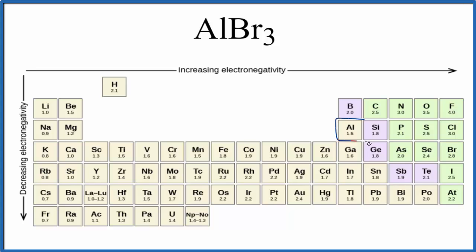We find aluminum right here and bromine right here. 2.8 and 1.5. The electronegativity difference between aluminum and bromine is 2.8 minus 1.5, which equals 1.3.